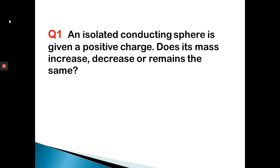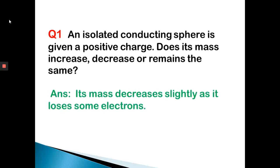Question 1: An isolated conducting sphere is given a positive charge. Does its mass increase, decrease, or remain the same? When a sphere is given a positive charge, electrons are removed from it. Since electrons are being removed, the mass will be decreasing. So its mass decreases slightly as it loses some electrons.